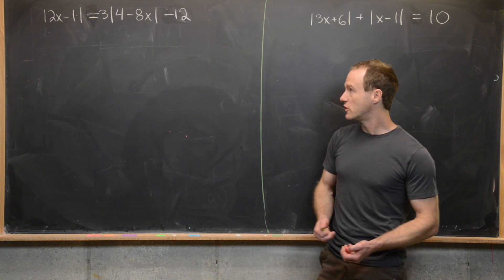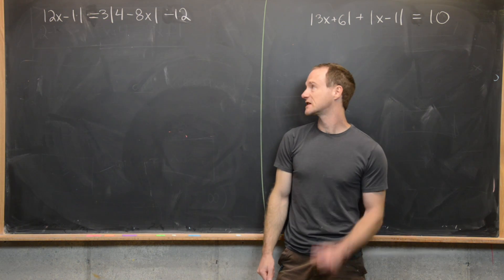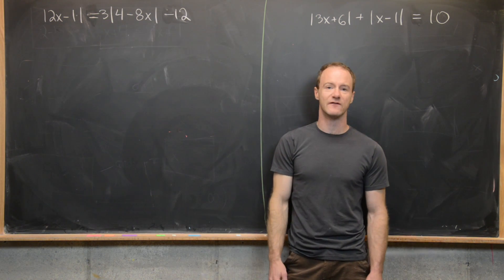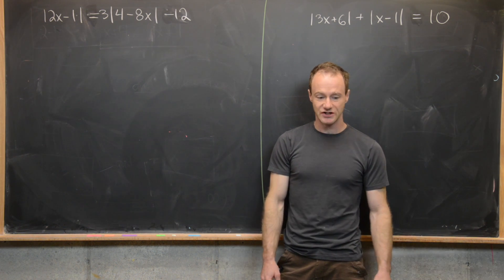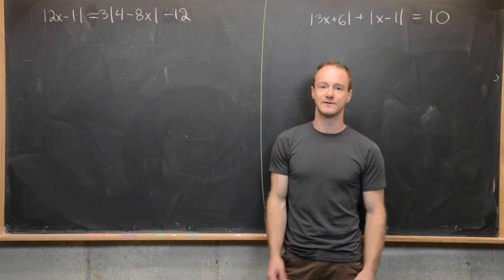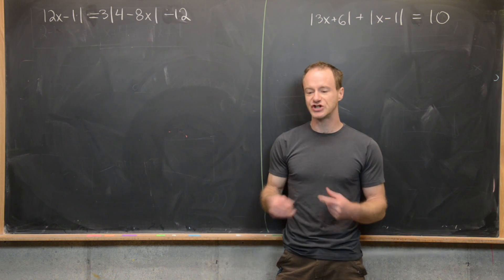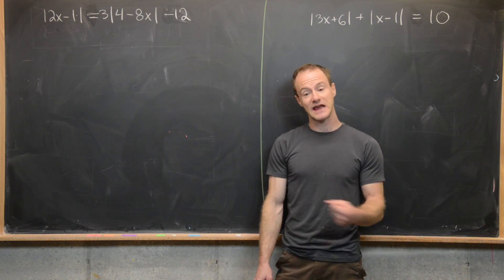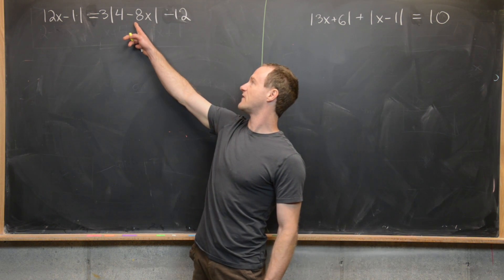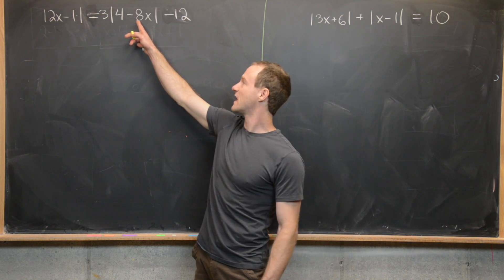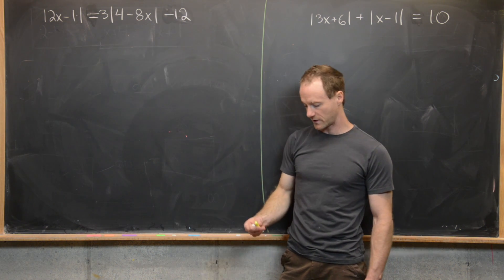What I want to notice here is we've got two types of objects within the absolute value: 2x minus 1 and also 4 minus 8x. Our first strategy whenever we see two types of objects within absolute values is to try to make them look the same, and generally we can do that by taking a common factor out of one of them. Notice there's a common factor of negative 4 — that'll change the sign so that it looks like the other one.